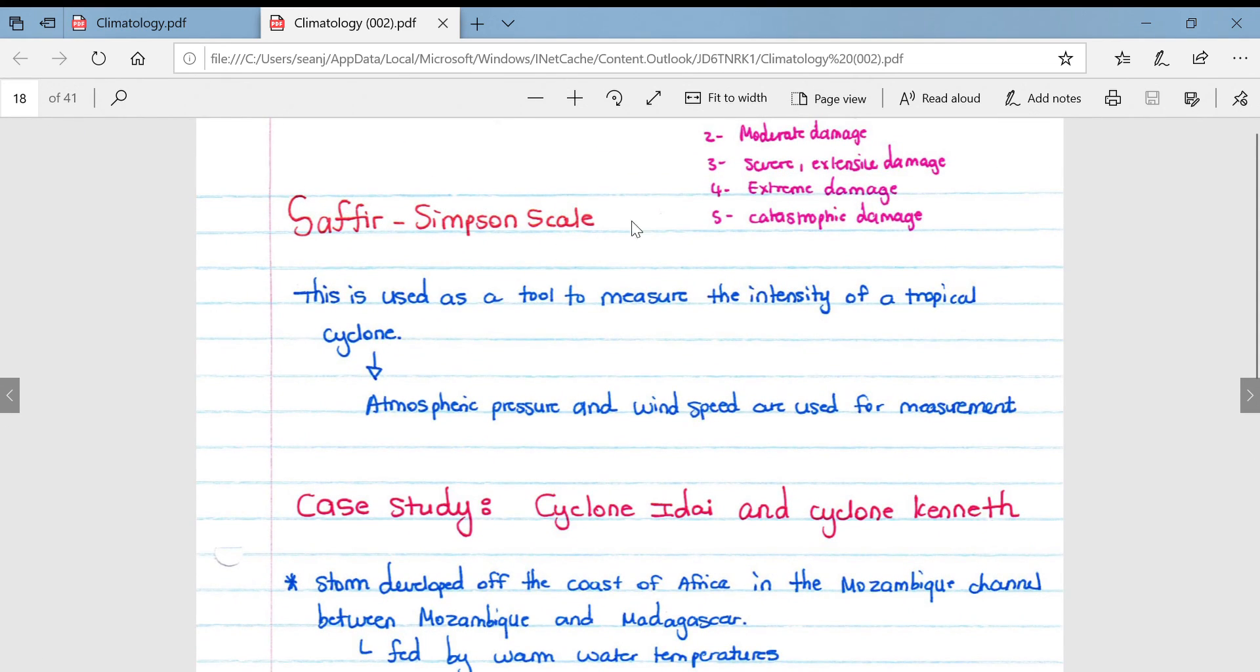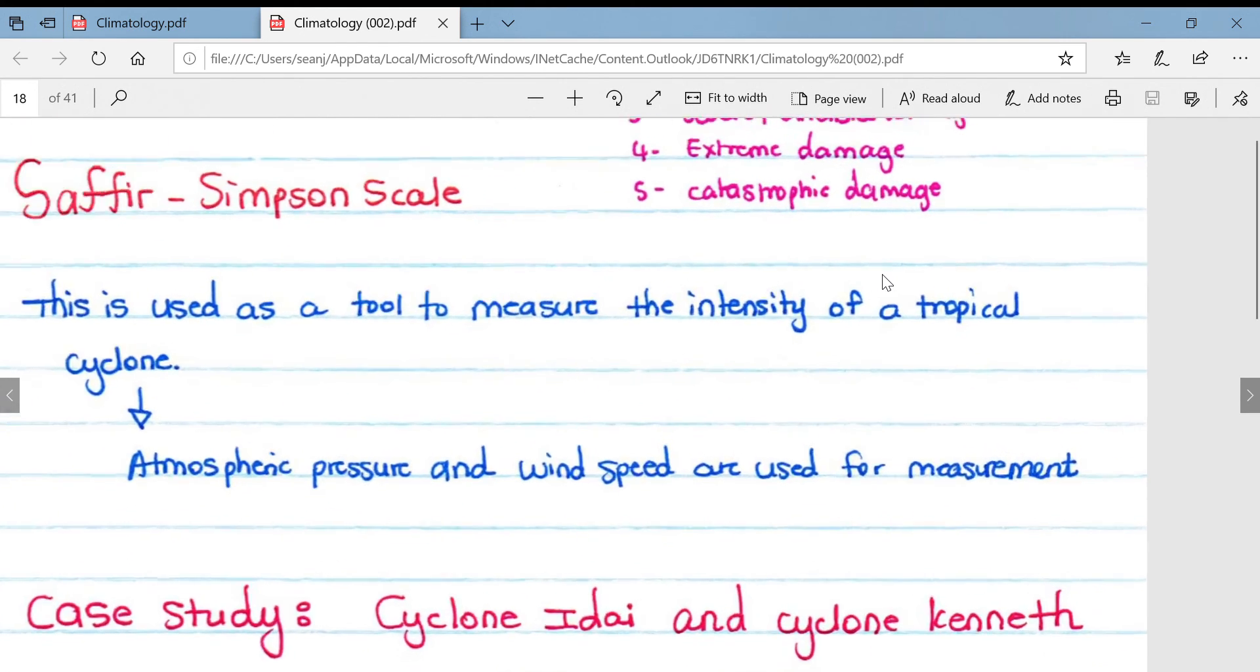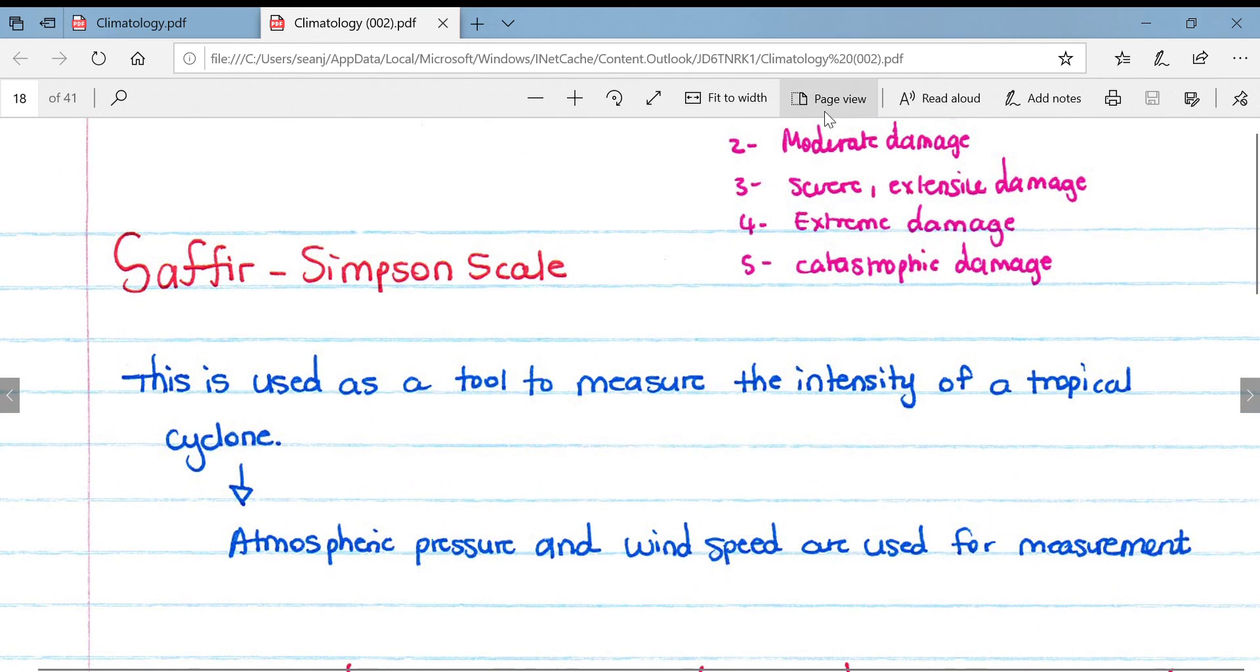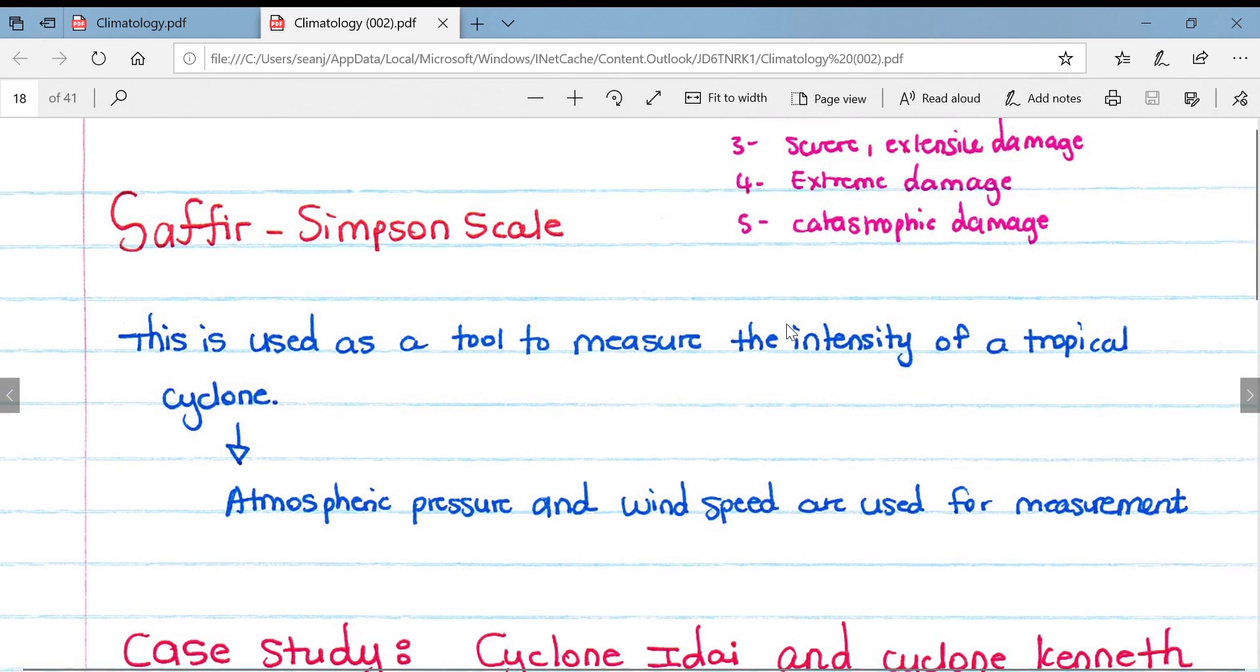Just look at the Saffir-Simpson scale used as a tool to measure the intensity of a tropical cyclone. Atmospheric pressure and wind speed are used for measurement. So if we just go here, obviously one on the Saffir-Simpson scale is very minimal damage, two is moderate damage, three is severe extensive damage, four is extreme damage, five is catastrophic damage.